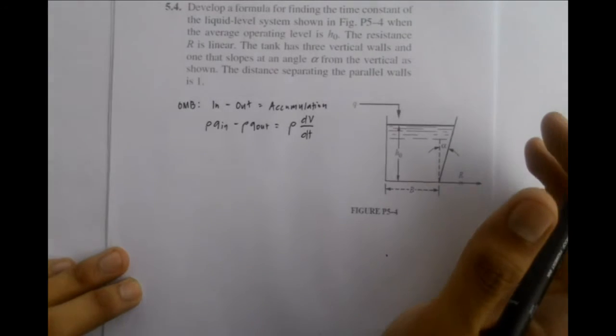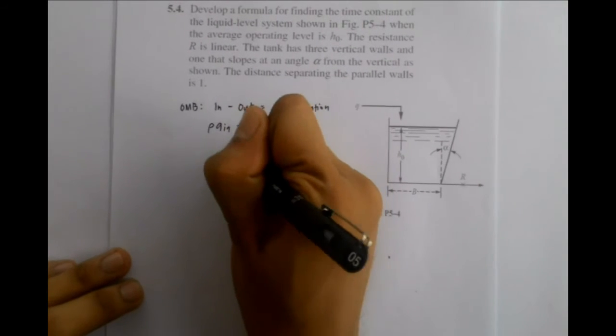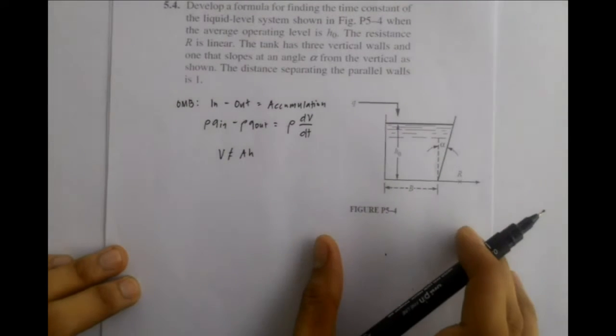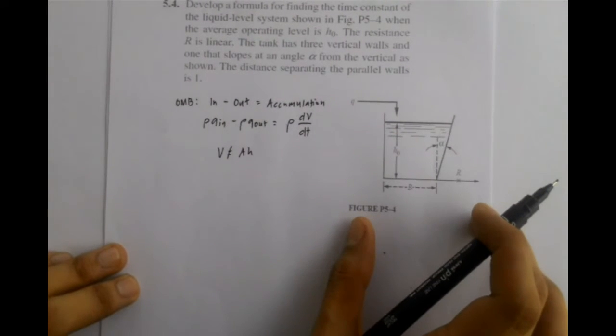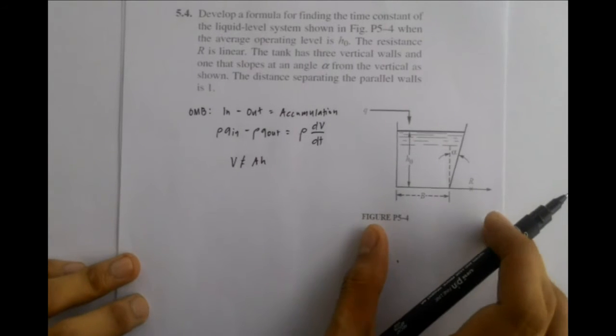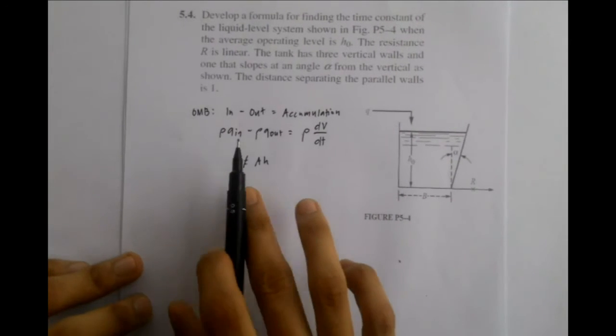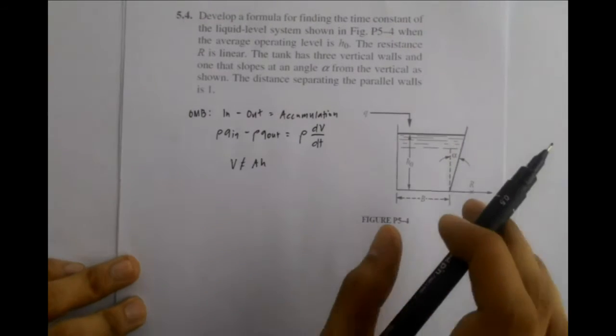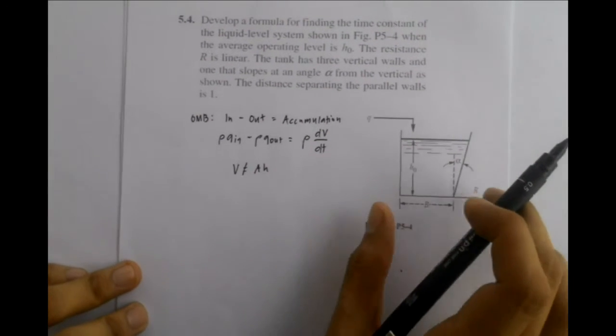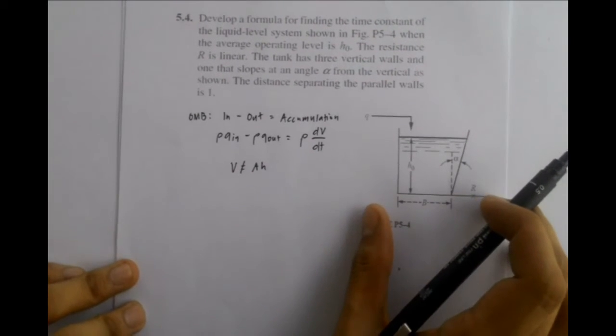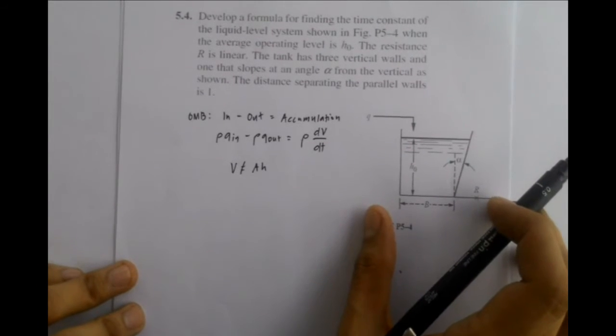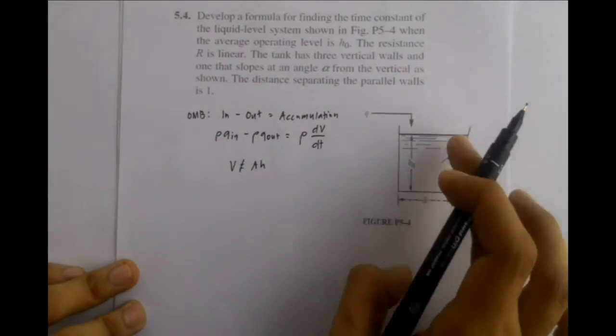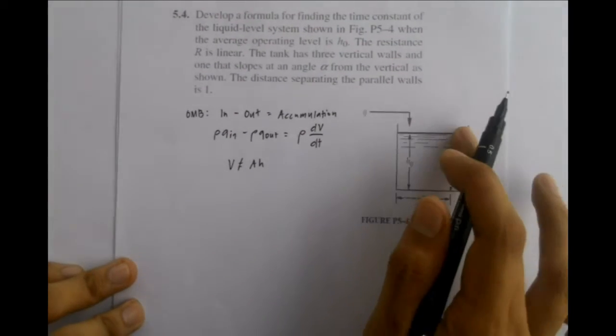Note that in this case, V is not equal to area times height since the cross-sectional area of this tank is not uniform. So in order to get the volume of the tank, we need to divide the tank into two components to easily get the overall volume. The division of the component is based on the geometry of the tank, which is divided into a rectangular component and the triangular component.